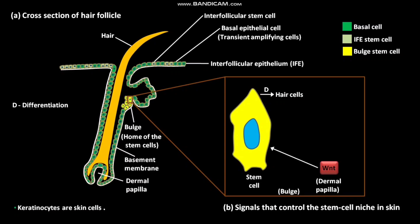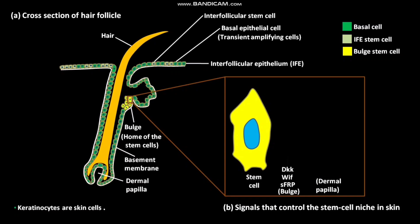In the bulge, at least three WNT inhibitors — DKK, WIF, and SFRP — block differentiation. As a result, the stem cell remains in the stem cell state. In the absence of WNT signaling, the stem cell undergoes differentiation to produce keratinocytes.